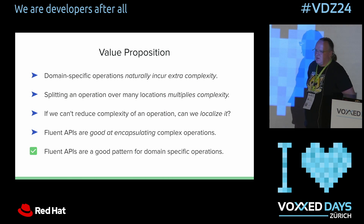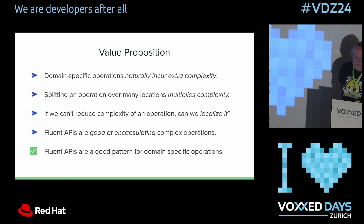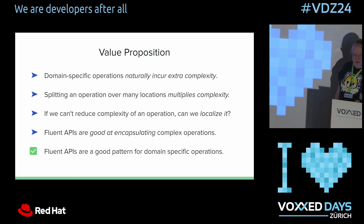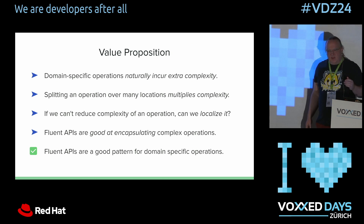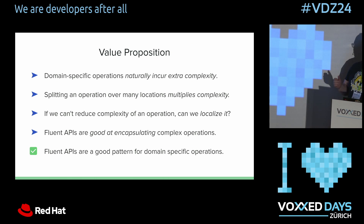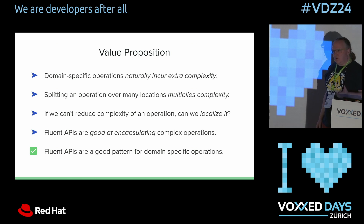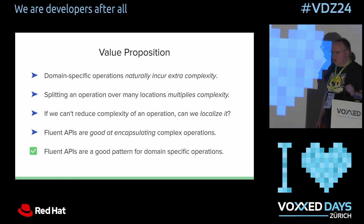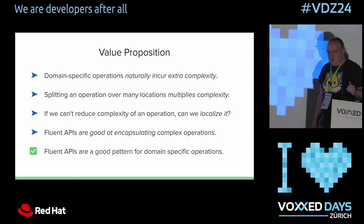The value proposition I came to was this: domain-specific operations come with extra complexity, whether it be understanding what regular expressions are, understanding SQL statements, and so on. You have to do something when you're thinking about those operations that adds to what you're already thinking about as a coder. If you then split that operation across multiple lines, you're sort of multiplying that complexity. You wouldn't want to see SQL statements built up over lots of different bits of code in lots of different classes, because if you look at one part of the code in isolation, you can't reason about it easily. Sometimes you can't reduce that complexity, but you can try to localize it. I believe fluent APIs are a good pattern for localizing complex operations, and they should be a pattern you go to when designing domain-specific operations.